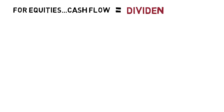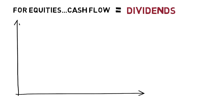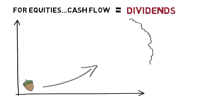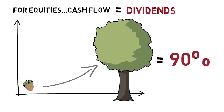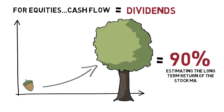For equity investors, cash flow primarily means dividends, and if we know two things about dividends — their starting point and how they're likely to change over time — we'll be 90% of the way to our goal of estimating the long-term return of the stock market.